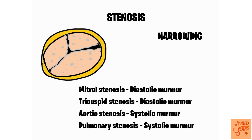The key concept is to understand how the murmur occurs during the diastolic phase in mitral and tricuspid stenosis, and during the systolic phase in aortic and pulmonary stenosis. This gives you a basic framework. When I cover individual lesions in separate videos, I'll specify exactly when these murmurs occur — whether mid-diastole or early systole — in a clear and simple way.